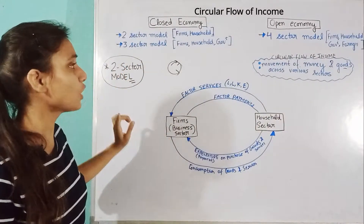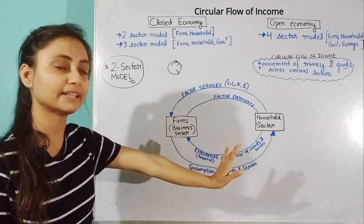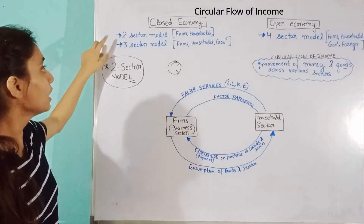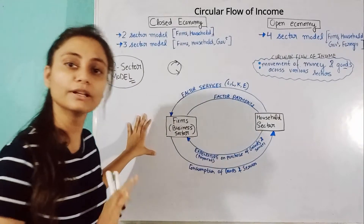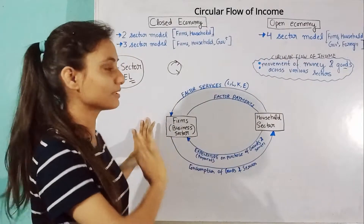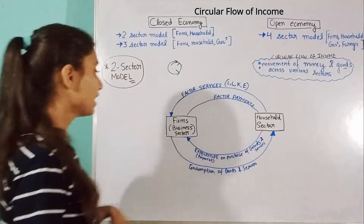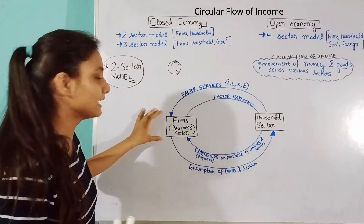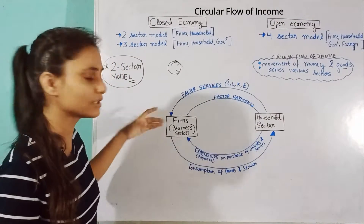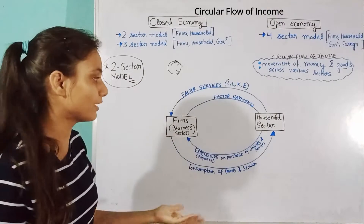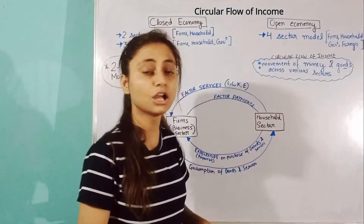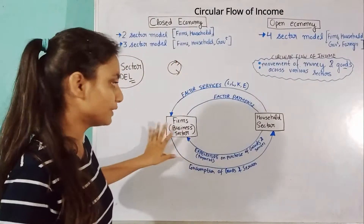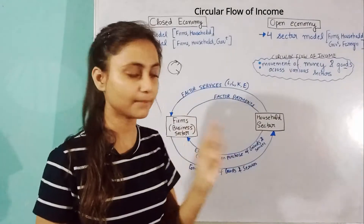We start with the two-sector model because once we understand it, everything else will follow. In this model we have the business sector — also called the producer sector or firms — and the household sector, which is the consumption sector. These are the two players: producers and consumers.